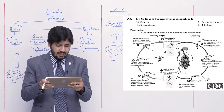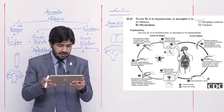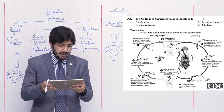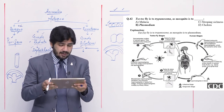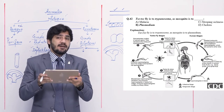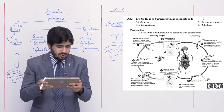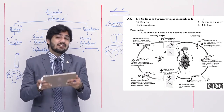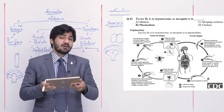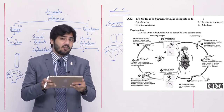Question number 42: tse-tse fly is to Trypanosoma as mosquito is to — alpha malaria, beta Plasmodium, charlie sleeping sickness, and delta cholera. Just as tse-tse fly transfers Trypanosoma, mosquito transfers Plasmodium. Right option is beta — Plasmodium. The disease caused is malaria. Sleeping sickness is caused by Trypanosoma. The vector for cholera is the common house fly.